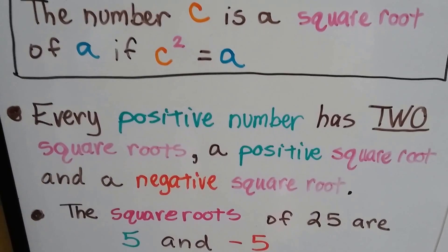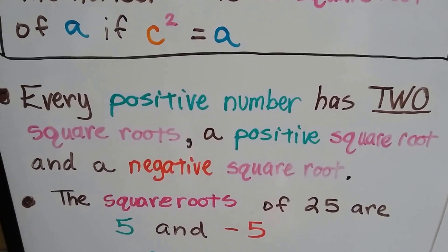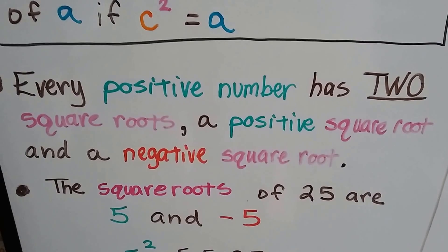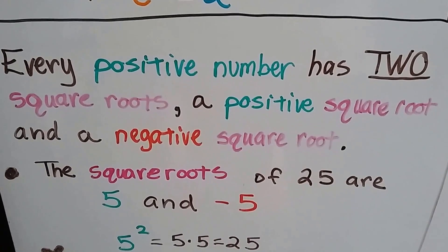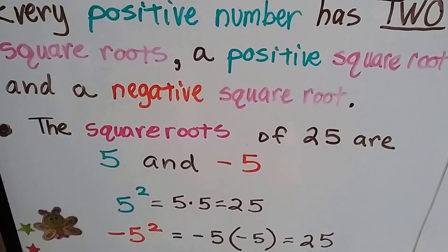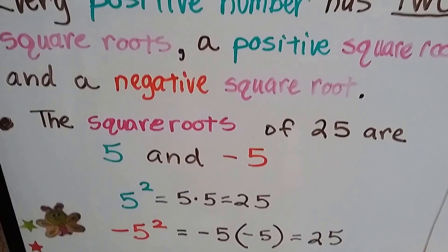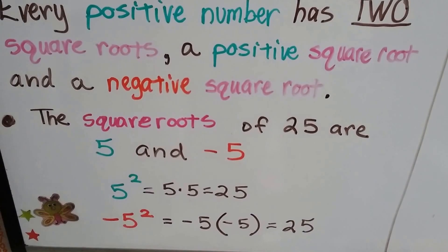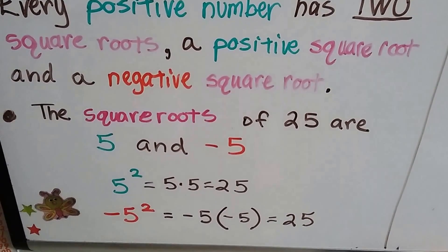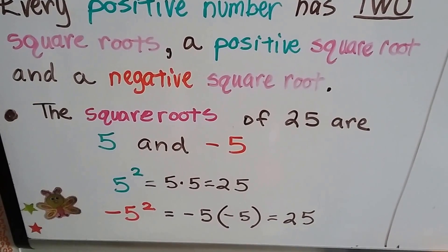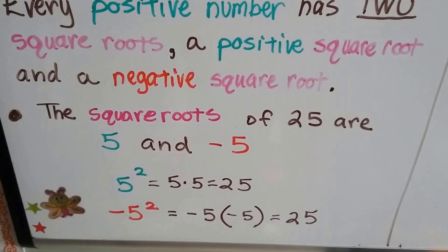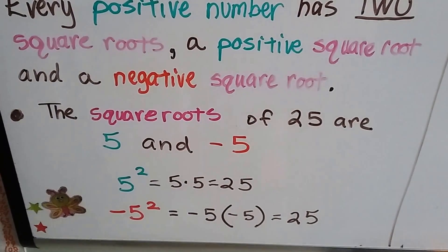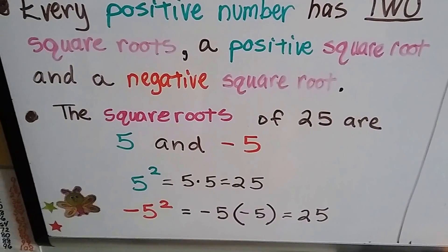Every positive number has two square roots, a positive square root and a negative square root. The square roots of 25 are 5 and negative 5. 5 to the second power is 5 times 5, that's a positive 25. And negative 5 to the second power is negative 5 times negative 5, that also equals a positive 25. So every positive number has two square roots, a positive and a negative.